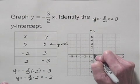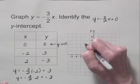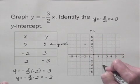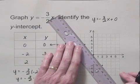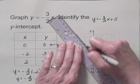We have 0, 0. We have negative 2, 3. And we have 2, negative 3. And we'll draw the line that contains those three points.